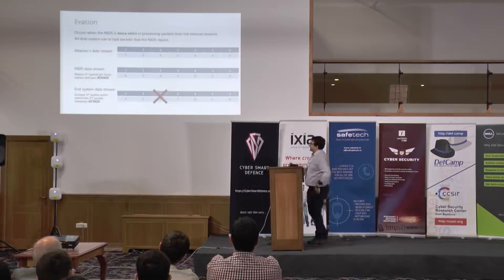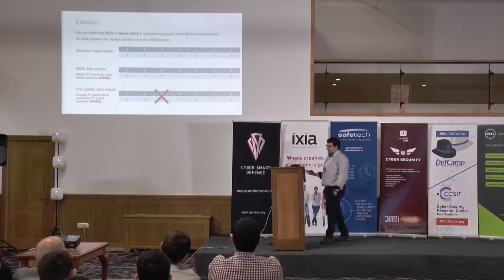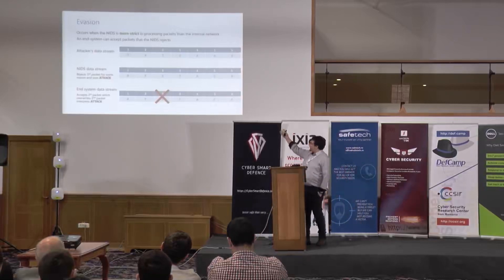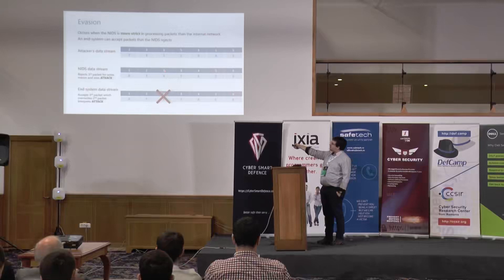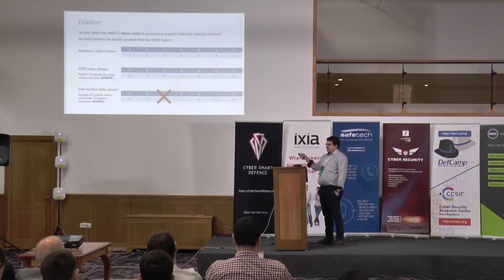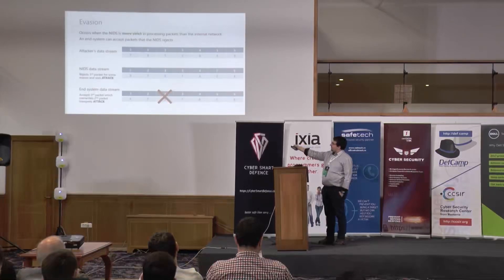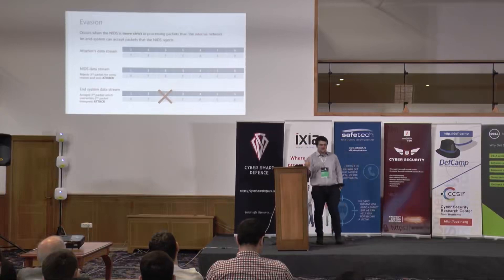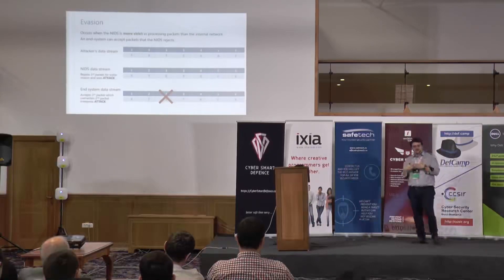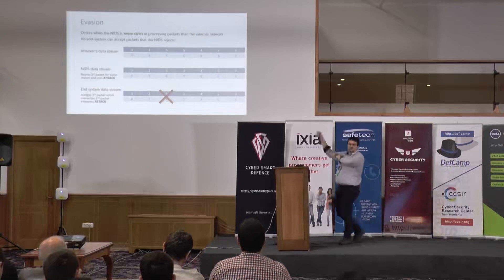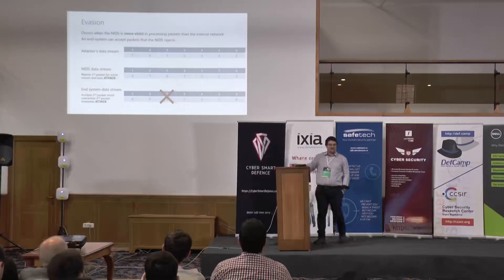The opposite of this is called evasion — this is when the IDS is more strict at processing packets than the network. You've got the same sequence; however, the IDS accepts the first packet you send and discards the later one, while the target discards the first and accepts the last. It's sort of the same result but differs in behavior on both the IDS and the target. The real insertion or evasion attacks are usually exploiting basic network and protocol ambiguities — either in the header fields, the way header options are handled, or in fragment or segment reassembly.